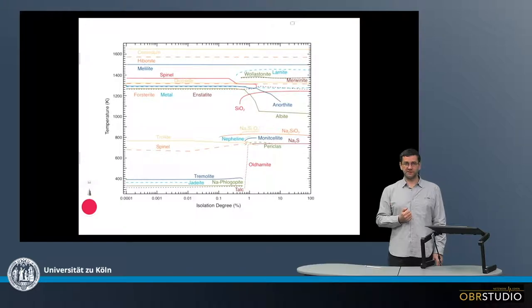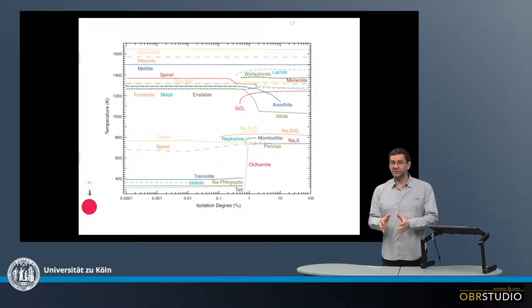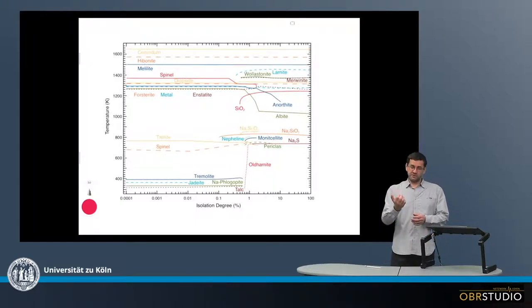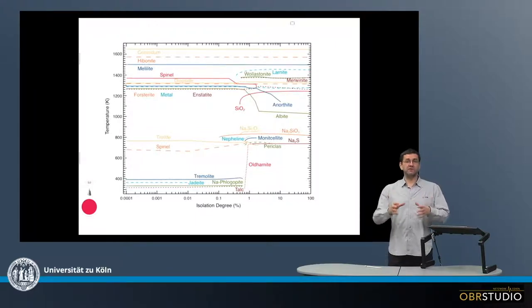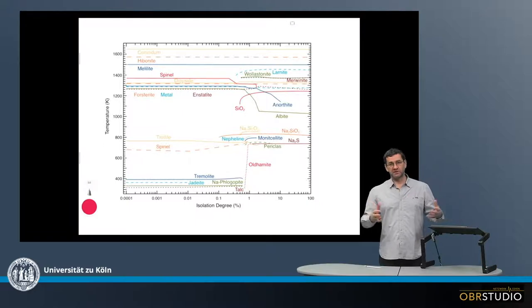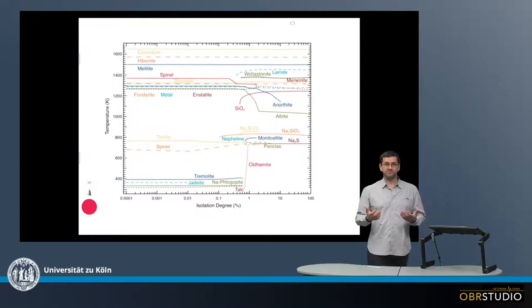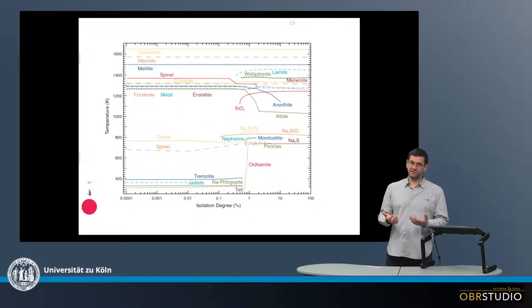This is called equilibrium condensation. Now the second way is that the condensing material did not completely react with the surrounding gas, but only part of the solids reacted with the surrounding gas. And this is then called fractional condensation.